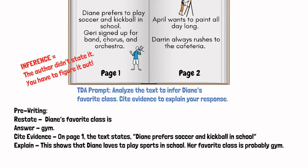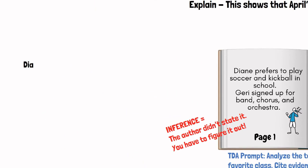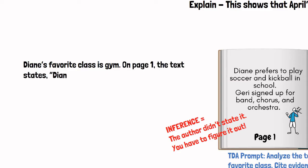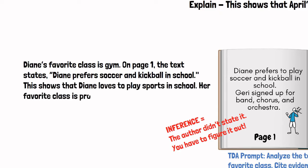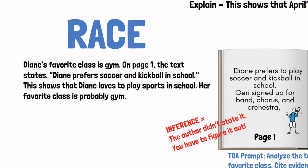That word in the prompt — infer — is what makes this a medium, because an inference requires you to figure something out without the author straight up telling you. I'm going to set up this response the same way for my pre-writing: restate, answer, cite evidence, and explain. I'm going to restate it as Diane's favorite class is, and now let's figure it out. She prefers to play soccer and kickball in school, so her favorite class is probably gym. I found that evidence on page one. Diane's favorite class is gym. On page one, the text states, quote, Diane prefers soccer and kickball in school. This shows that Diane loves to play sports in school. Her class is probably gym. I restated, I answered, I cited evidence, and I explained my answer.